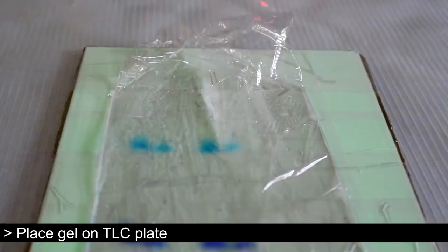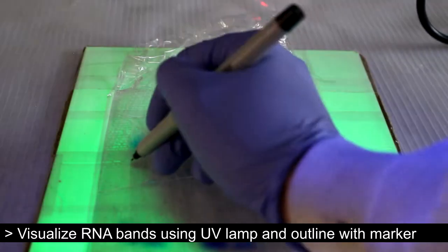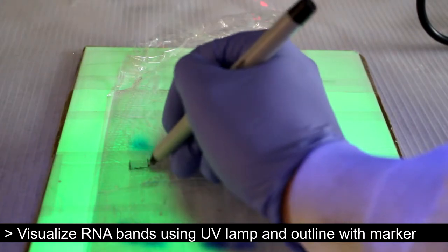The gel is then placed on a TLC plate to visualize nucleic acid bands. The bands are outlined with sharpie on the plastic wrap.